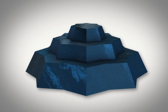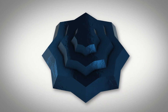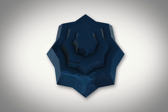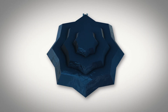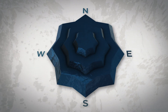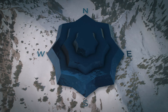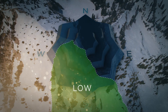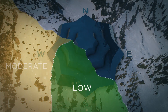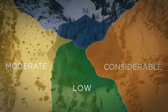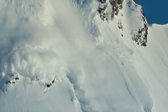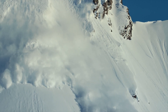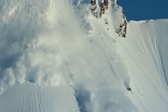Now picture the same mountain from a bird's eye view. The danger rose is really cool because it also shows us which side of the mountain is dangerous. For example, the south facing slopes are green, which means low danger — you could ride there all day long — versus the north facing side, which is red, meaning high danger and backcountry travel is not recommended.